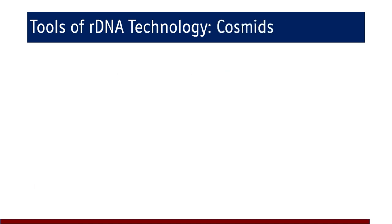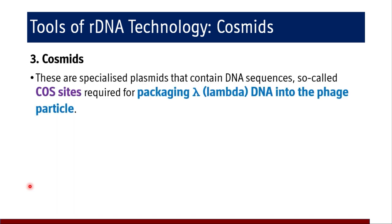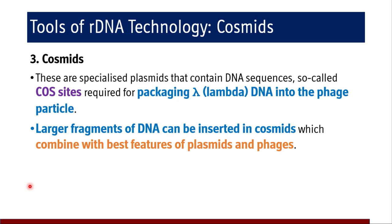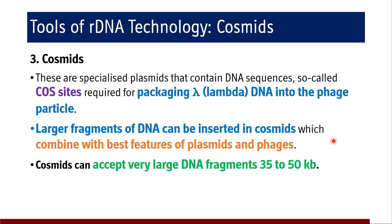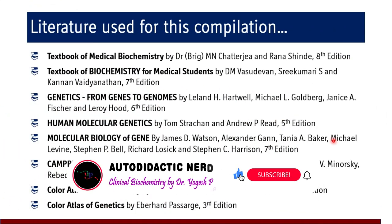Cosmids are specialized plasmids that contain DNA sequences called cos sites, required for packaging lambda DNA into the phage particle. Larger fragments of DNA can be inserted into cosmids, which combine the best features of plasmids and phages. Cosmids can accept very large DNA fragments, perhaps 35 to 50 kilobase pairs. Please refer to the listed references for further studies.